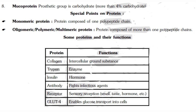Some proteins and their functions: collagen helps in intercellular ground substance; trypsin acts as an enzyme; insulin acts as a hormone; antibodies, which are composed of protein, fight infectious agents; receptor proteins help in sensory reception like smell, taste, and hormones; and GLUT4, a glucose transport protein, helps in glucose transportation into cells.